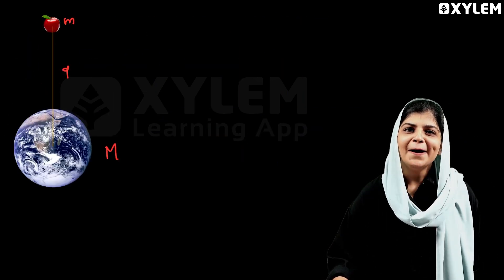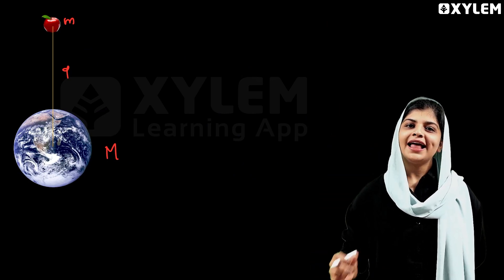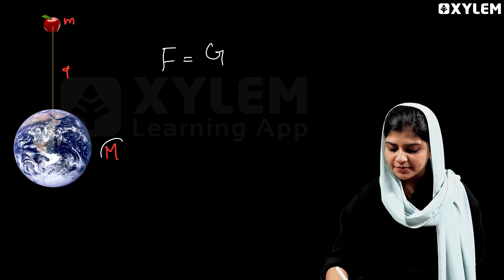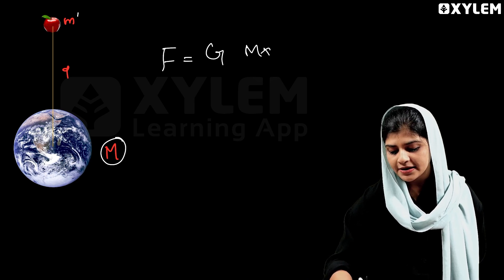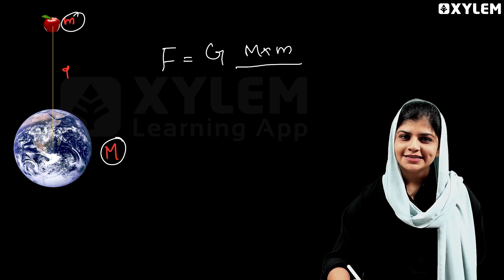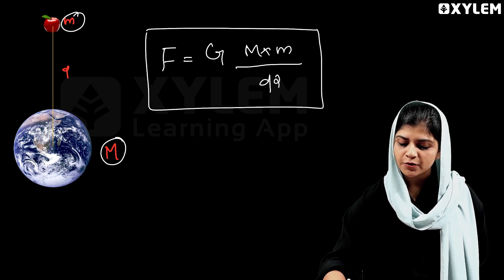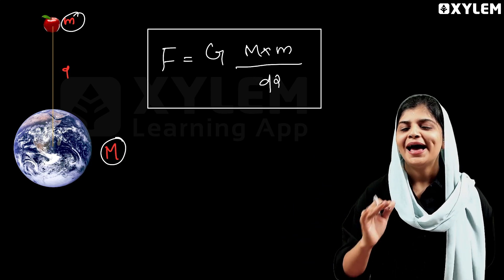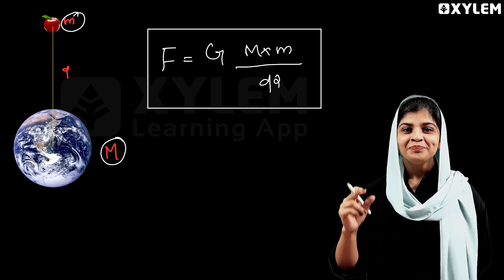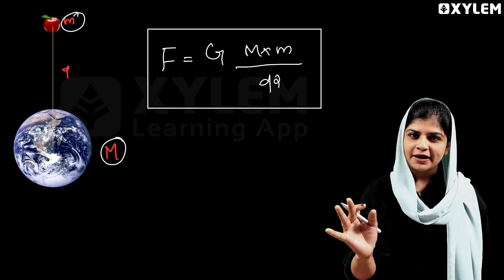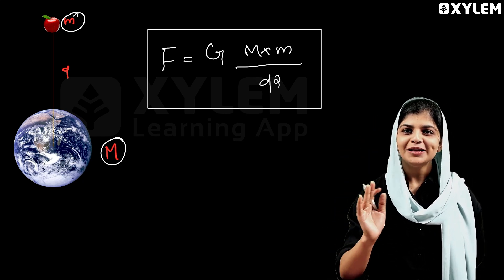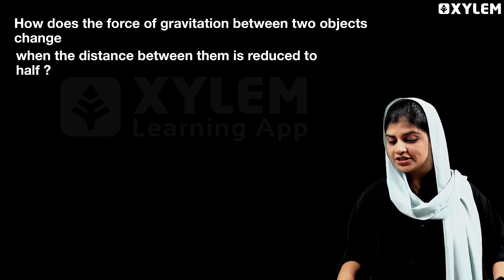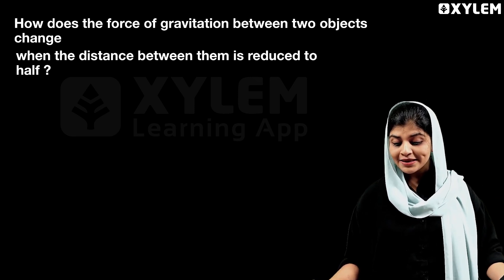Now let's go to the first question: How does the force of gravitation between two objects change when the distance between them is reduced to half? We are given two masses M and m, and distance D.